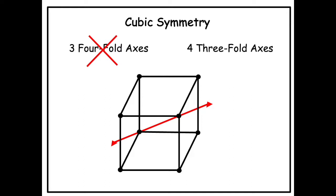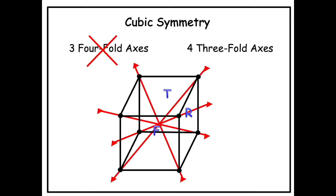Where are these 4 three-fold axes? They are along the body diagonals of the cube. If you look at a body diagonal, you can see that 3 faces and 3 edges meet at the corner from which the body diagonal passes. A rotation of 120 degrees about this axis permutes these faces and edges. So the top face goes to the front face, the front goes to the right, and the right goes to the top. There are 4 body diagonals in a cubic unit cell, so there are 4 different orientations of three-fold axes.